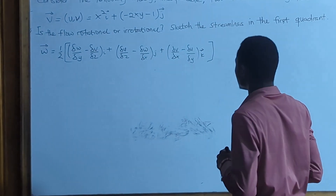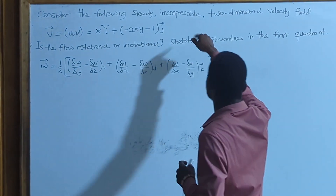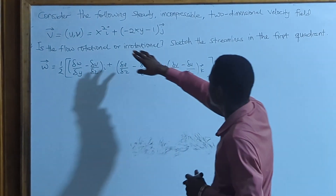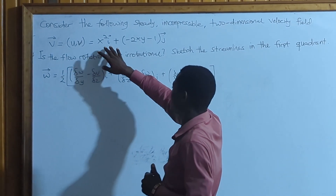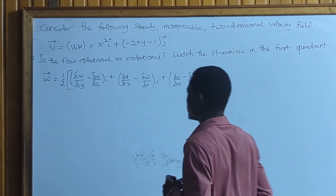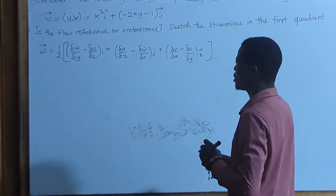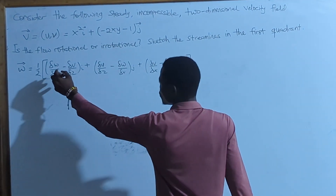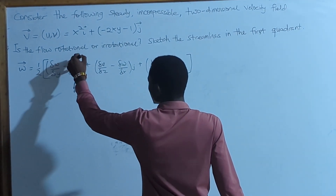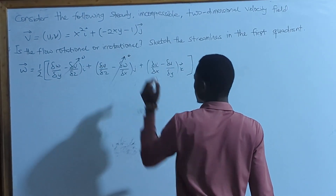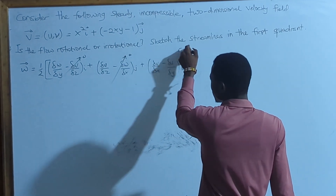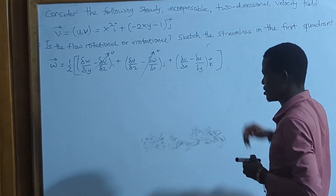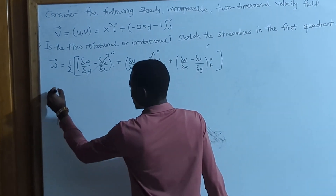We have some useful information: the flow is steady, incompressible, and two-dimensional, which means it is in the x and y coordinate system. Because it is two-dimensional, we can eliminate the z-direction terms, so those go to zero. We only have the velocity field in the k direction.